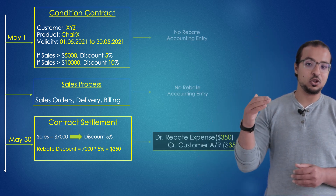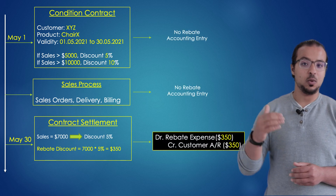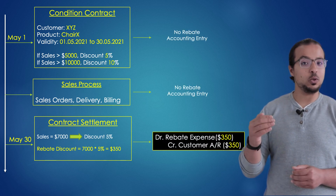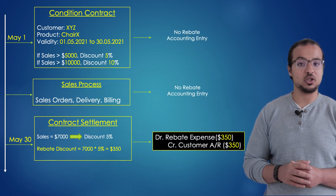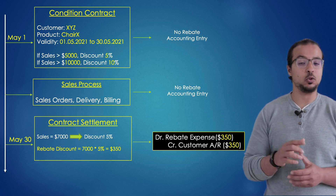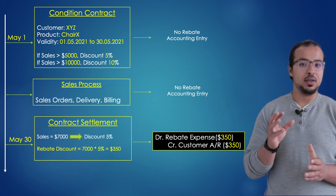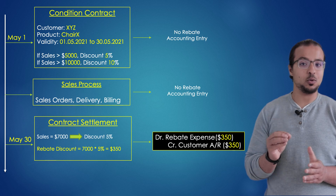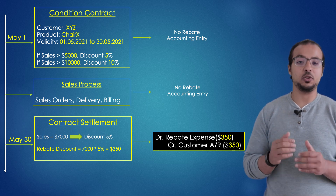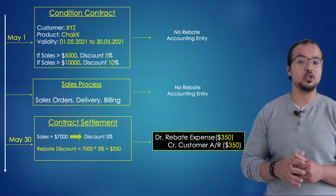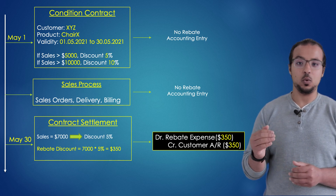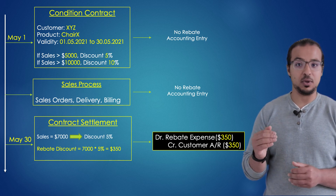Now let's look into the accounting entries of the process. When we create the condition contract, we don't have any accounting entries. And when we do the sales transaction, we also don't have any financial entries related to rebates. Because the rebate discount is only applied at the end of the contract when we check the total value that the customer achieved. So when we do the sales transaction, we don't post any rebate discount.